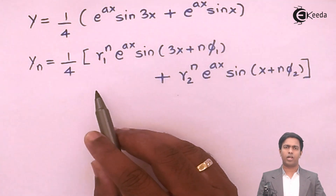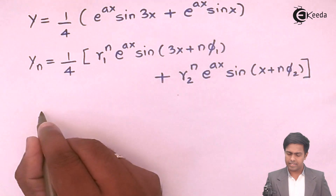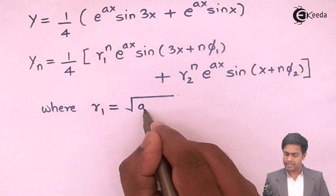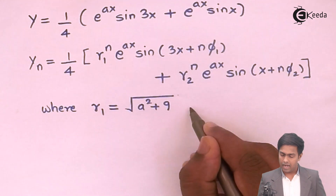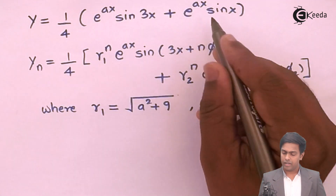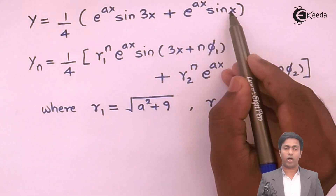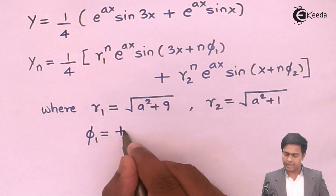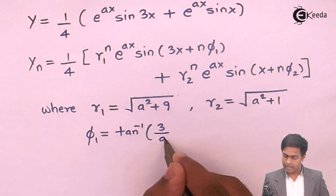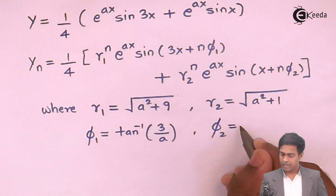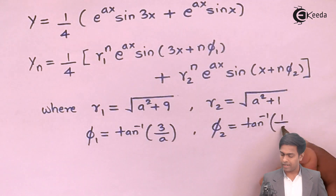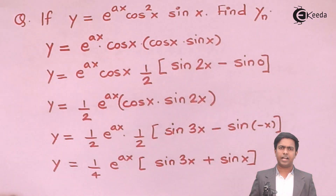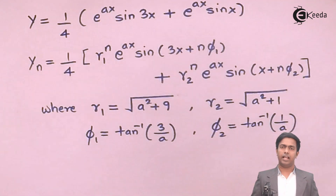Since r = √(a² + b²): for the first term b = 3, so r1 = √(a² + 9); for the second term b = 1, so r2 = √(a² + 1). Since φ = tan⁻¹(b/a): φ1 = tan⁻¹(3/a) and φ2 = tan⁻¹(1/a). This gives us the complete nth derivative of the given function.